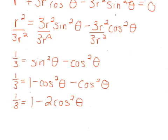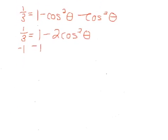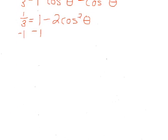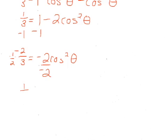We just want to isolate our trig function. So let's subtract 1. So negative 2 thirds equals negative 2 cosine squared theta. And then divide by negative 2 or multiply by negative 1 half. So we end up with 1 third equals cosine squared theta.